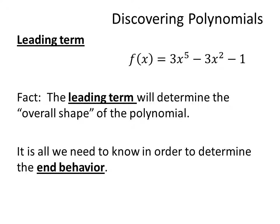So in this case, the leading term is 3x to the fifth power. The leading coefficient would be 3, and the constant term would be negative 1. The leading term is very important because it always determines the overall shape of the polynomial — what we call the end behavior.